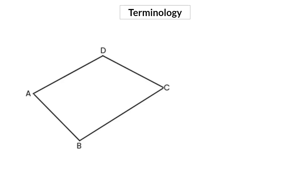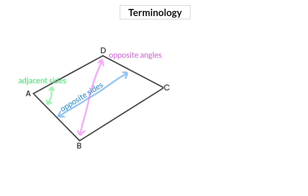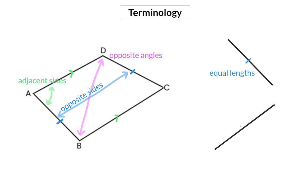A quadrilateral has four angles and four sides. When we compare angles or sides, we can firstly compare the opposite sides — in this case we have one pair of opposite sides — or we can compare adjacent sides. We can also have a look at opposite angles. If sides are equal in length, it is indicated with a line on that specific side. Sides that are parallel to each other can be indicated with an arrow on these lines.